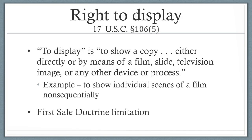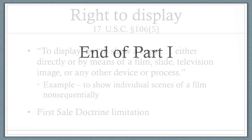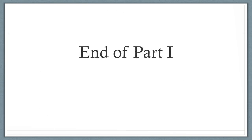The right to display provision is the first explicit statutory recognition in U.S. copyright law of an exclusive right to show a copyrighted work or an image of it to the public. To display is to show a copy either directly or by means of a film, slide, television image, or any other device or process. The right to display is also subject to the first sale doctrine limitation. Therefore, a lawful owner of a copy of a work may display it to viewers present in the place where the work is located — for example, a museum or gallery — but not online without the consent of the copyright owner. This concludes Art and Copyright Part 1. Next, I will discuss copyright infringement and fair use, focusing on appropriation art cases.